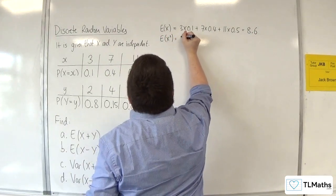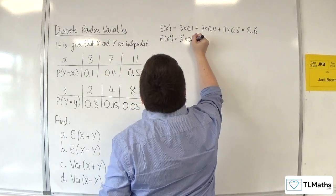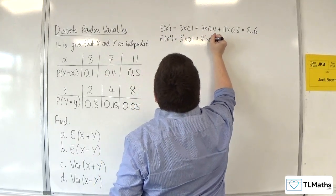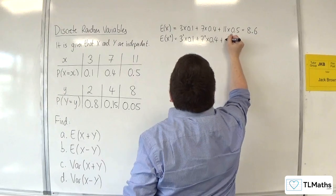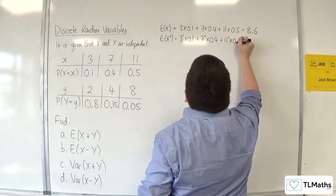So E of X squared is 3 squared times 0.1 plus 7 squared times 0.4 plus 11 squared times 0.5.